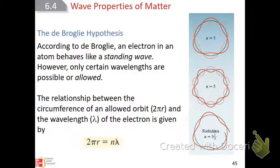De Broglie says that an electron moves like a standing wave — that electrons, as they're moving around, travel in these waves and make this wave-type pattern. But he said they're only allowed to be in certain wavelengths because they only have a certain amount of energy. This is why he hypothesized that an electron cannot spin itself into the nucleus of an atom and be annihilated.